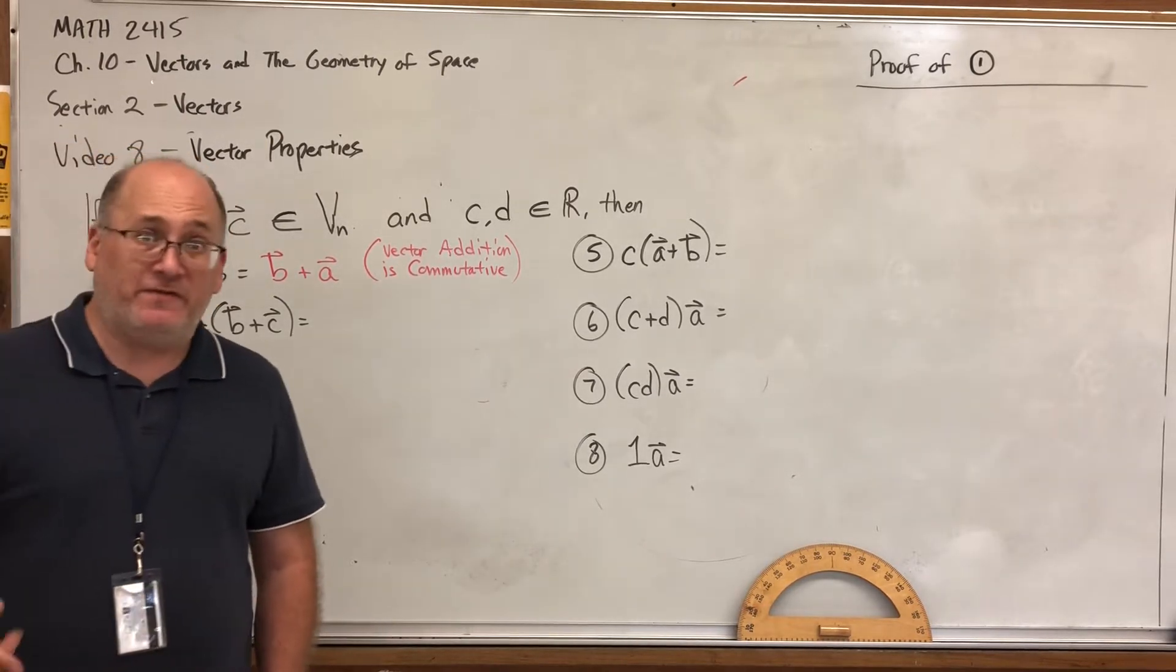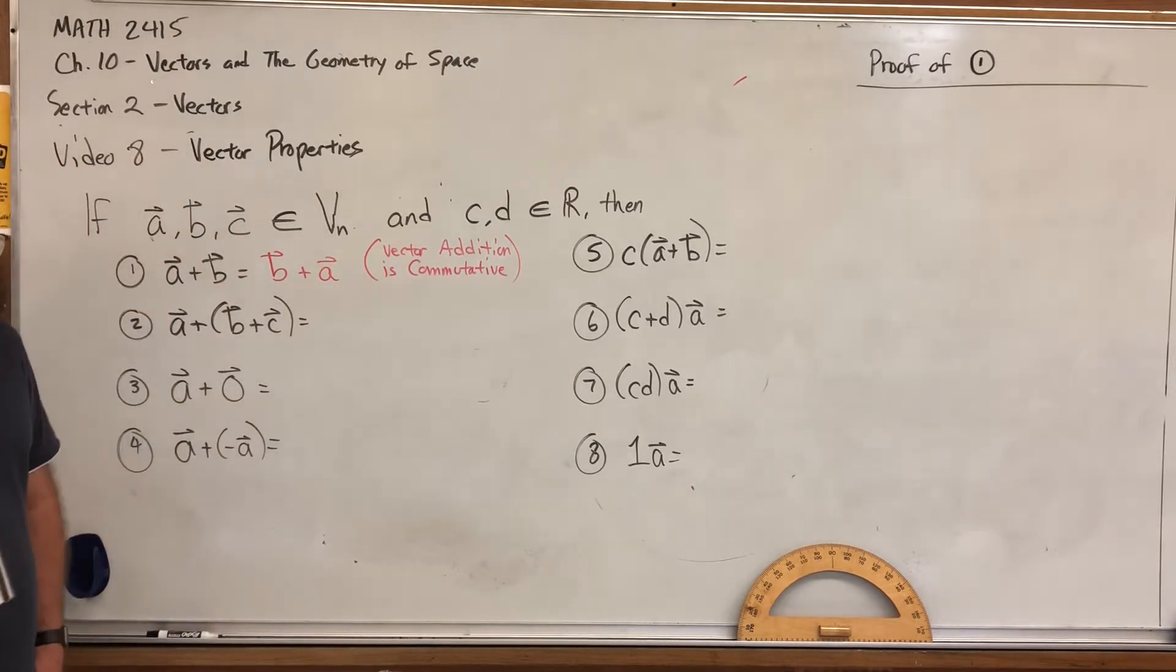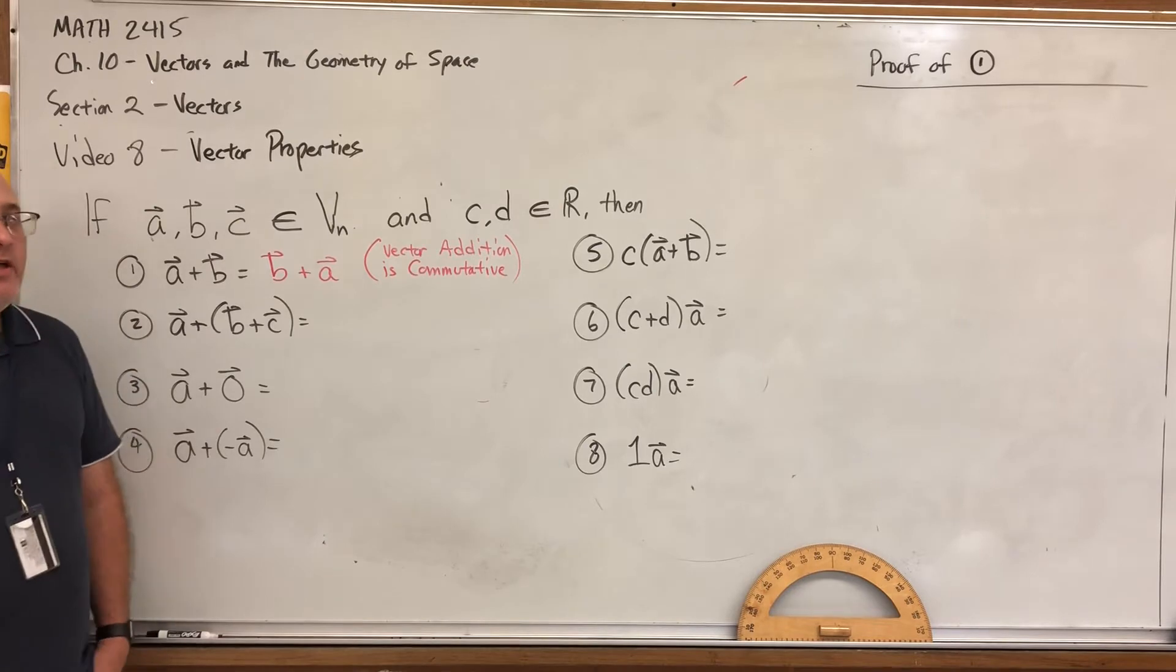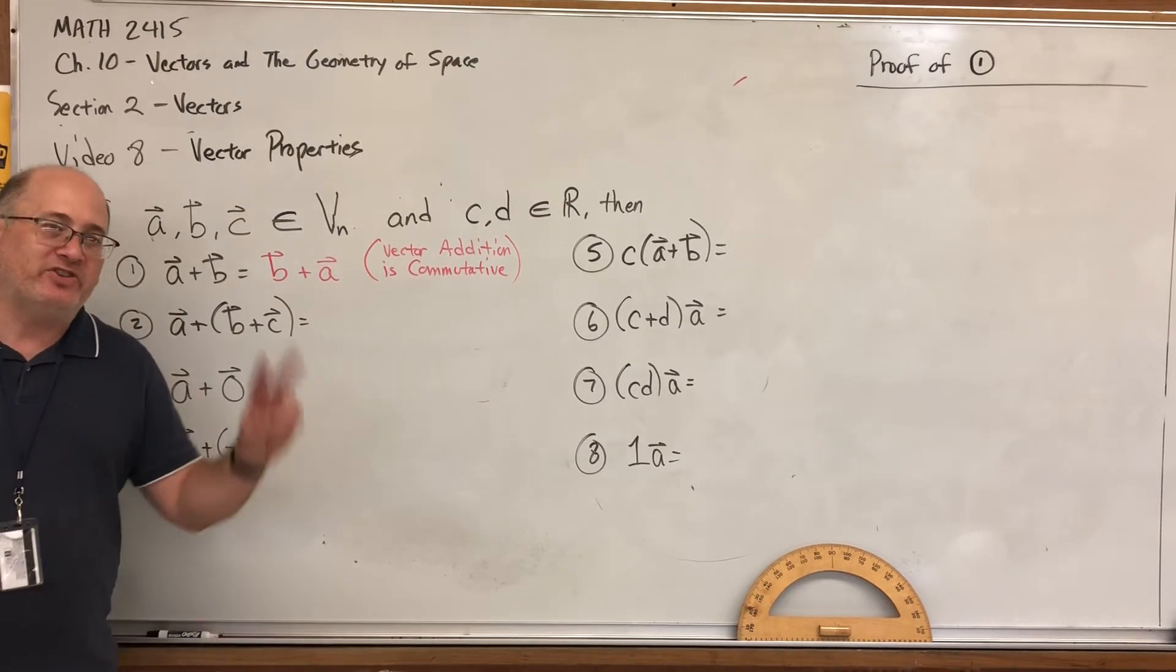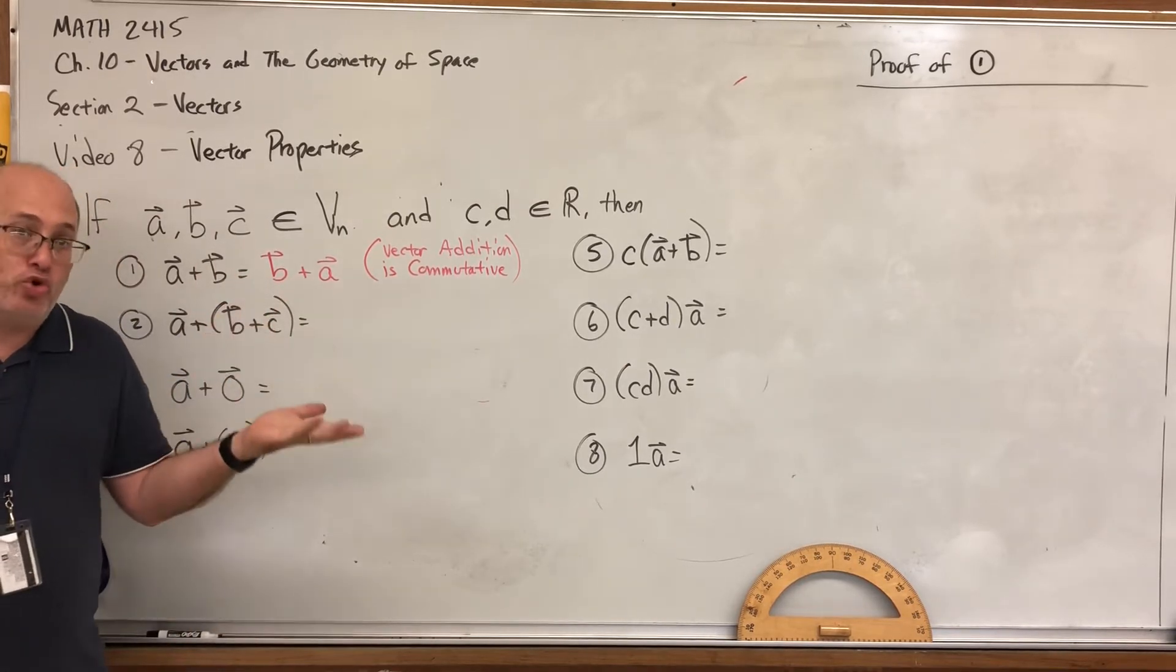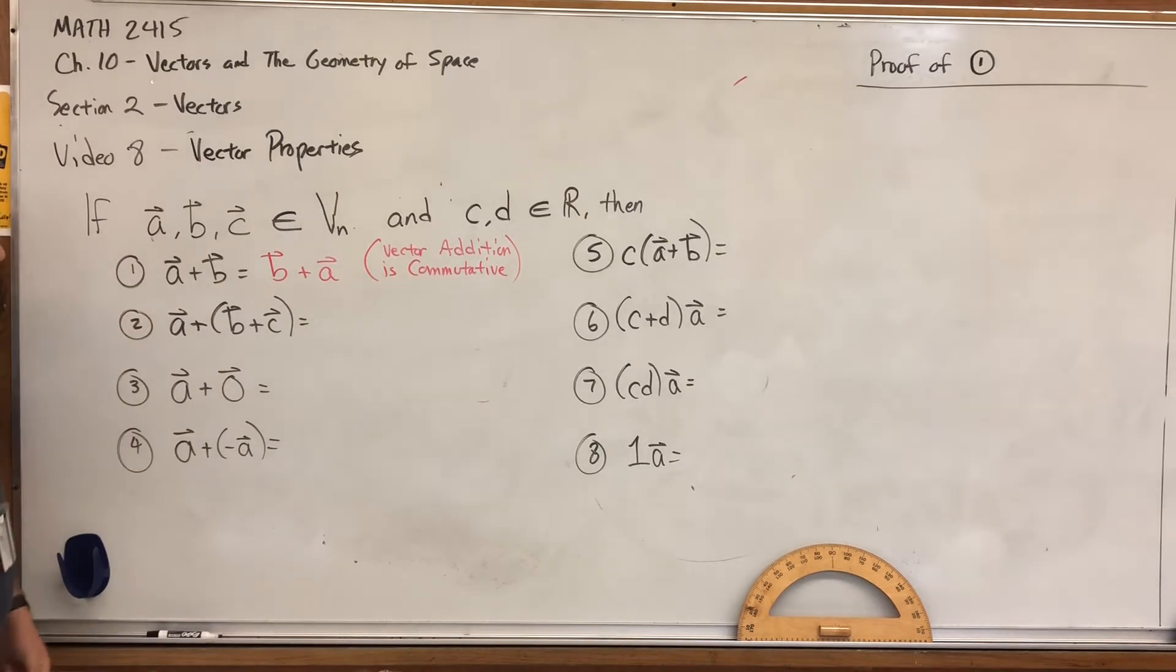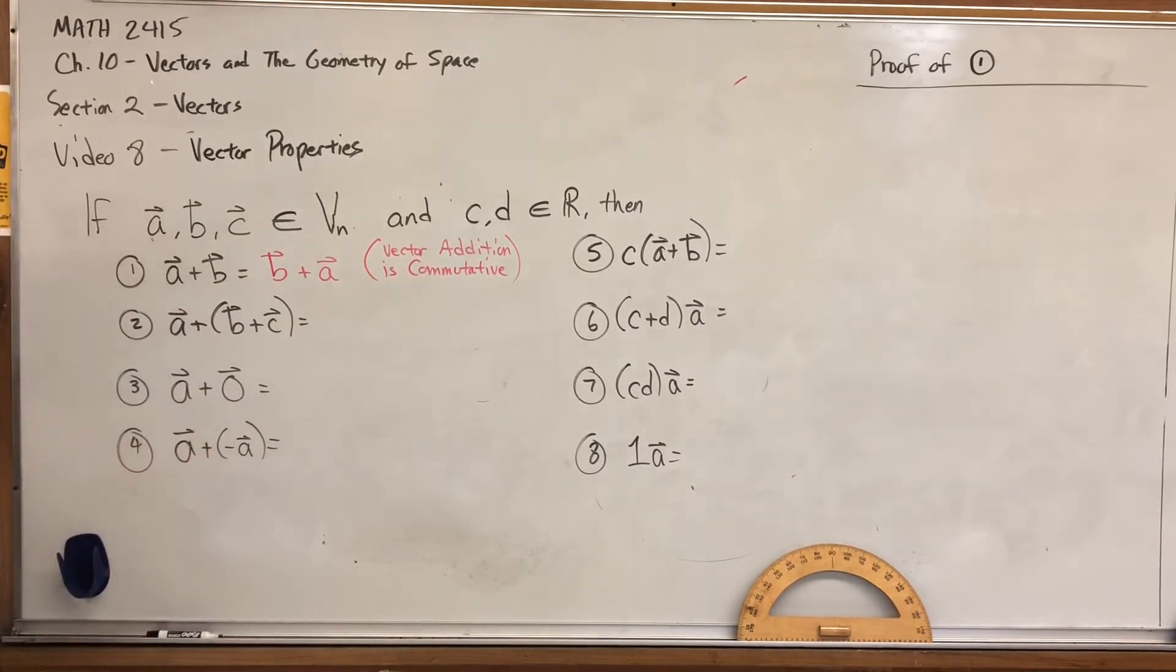Three plus five equals five plus three. It happens to be true for vectors, but you can't just assume that it's true. There are operations that even look like addition in higher-level math classes that are not commutative in the sense that you can't just change the order and get the same answer. Now, visually, you can think about why these are equal. Think about the parallelogram rule, if you will. But that's what the first property is, is that vector addition is commutative.